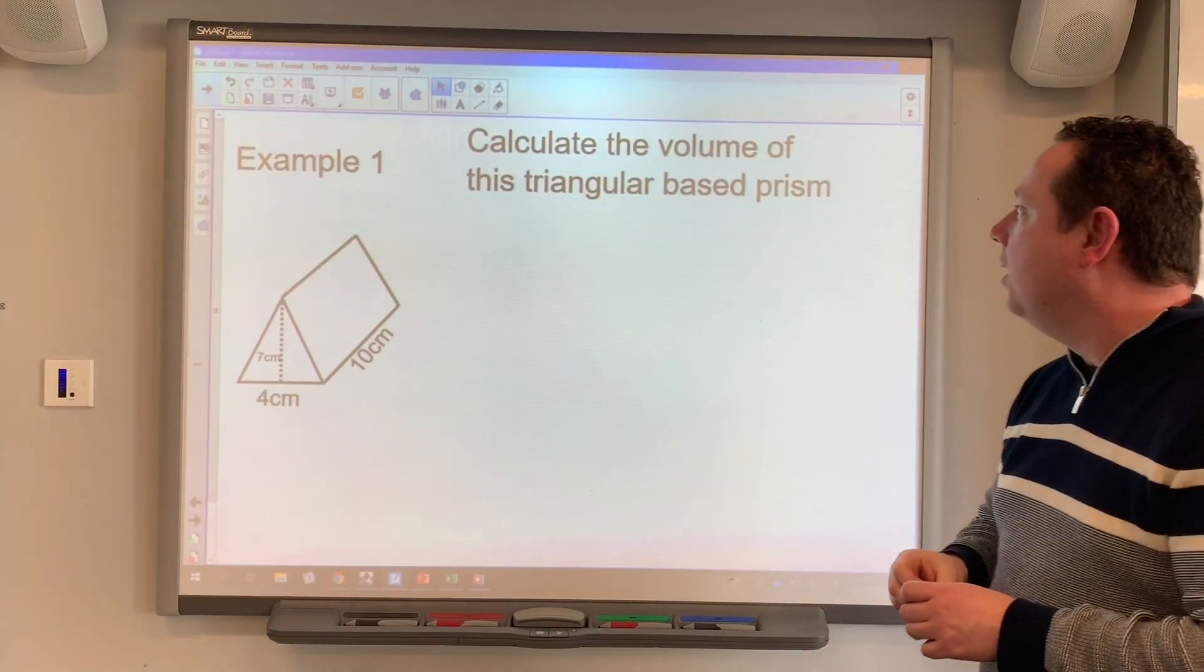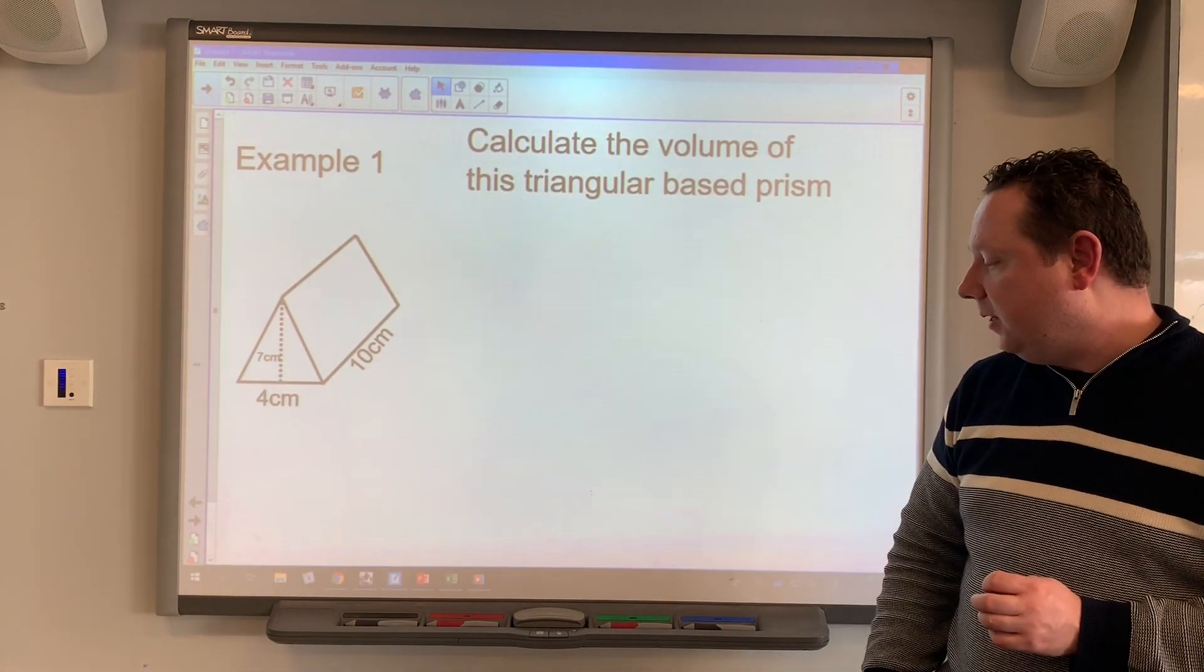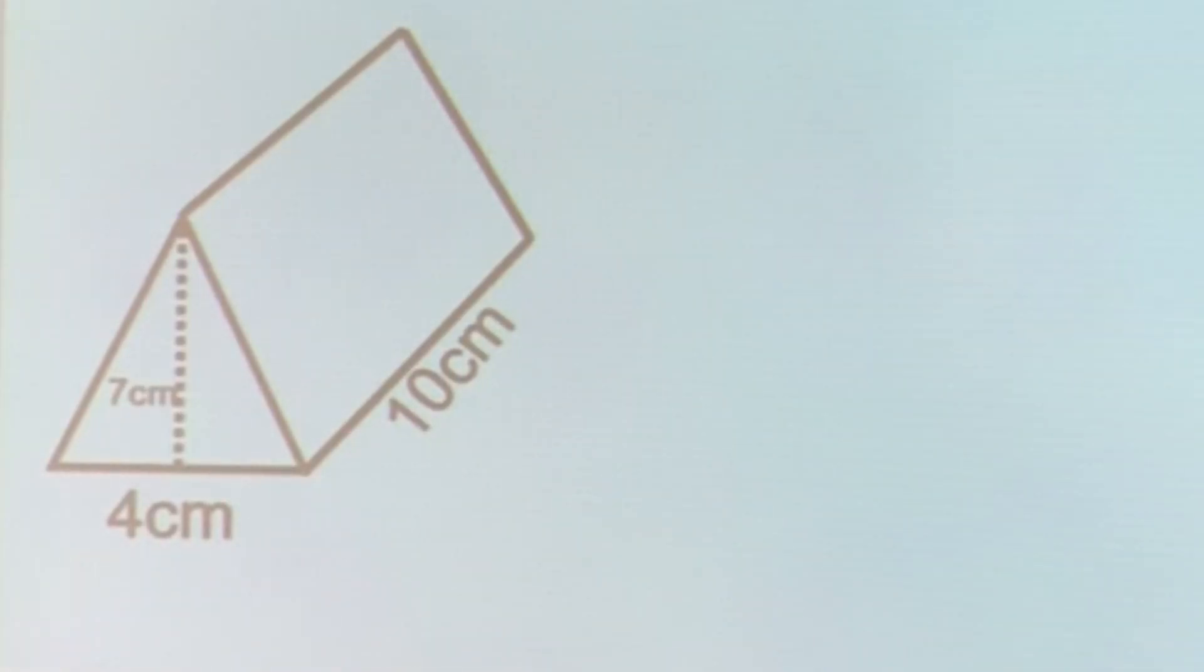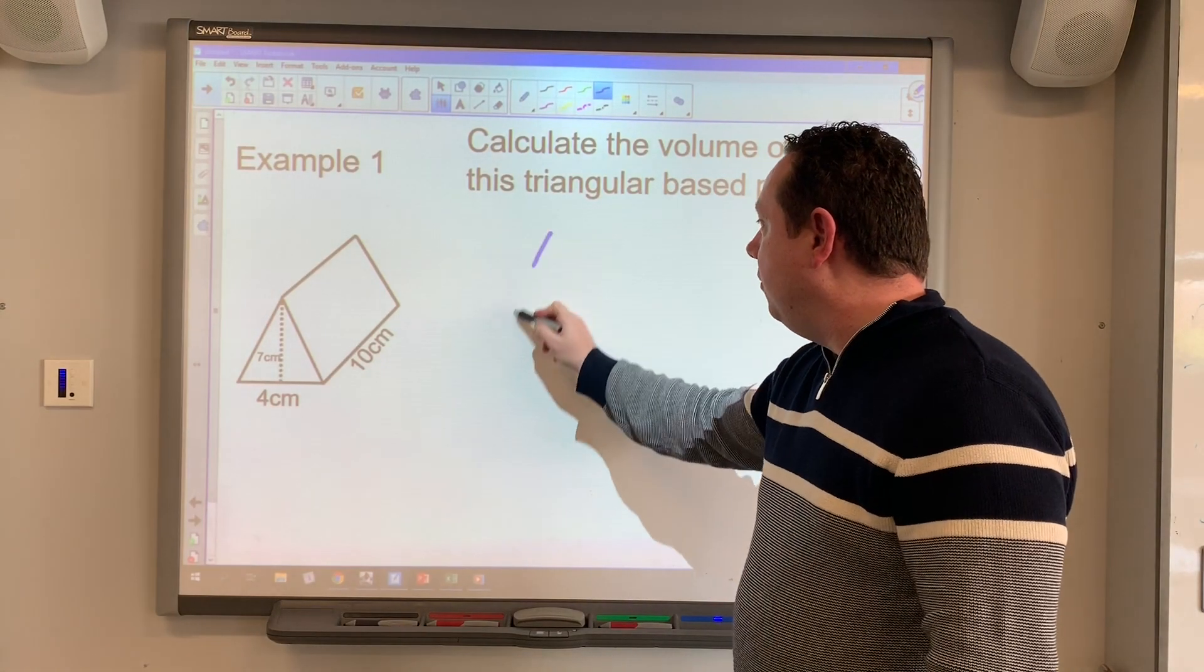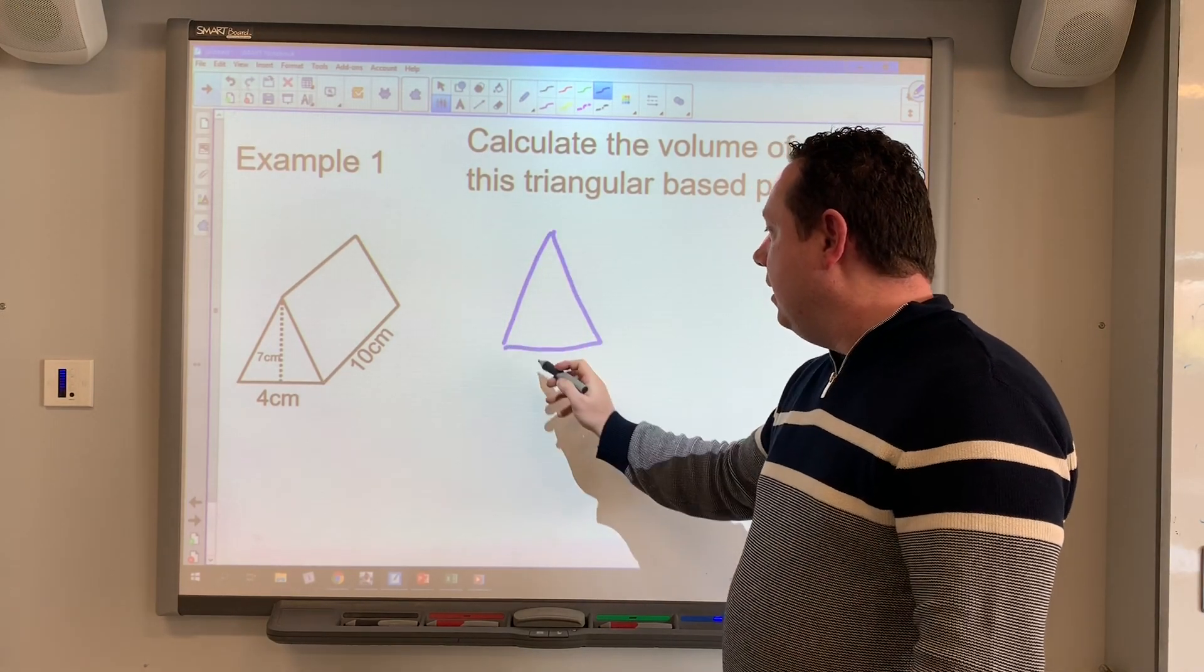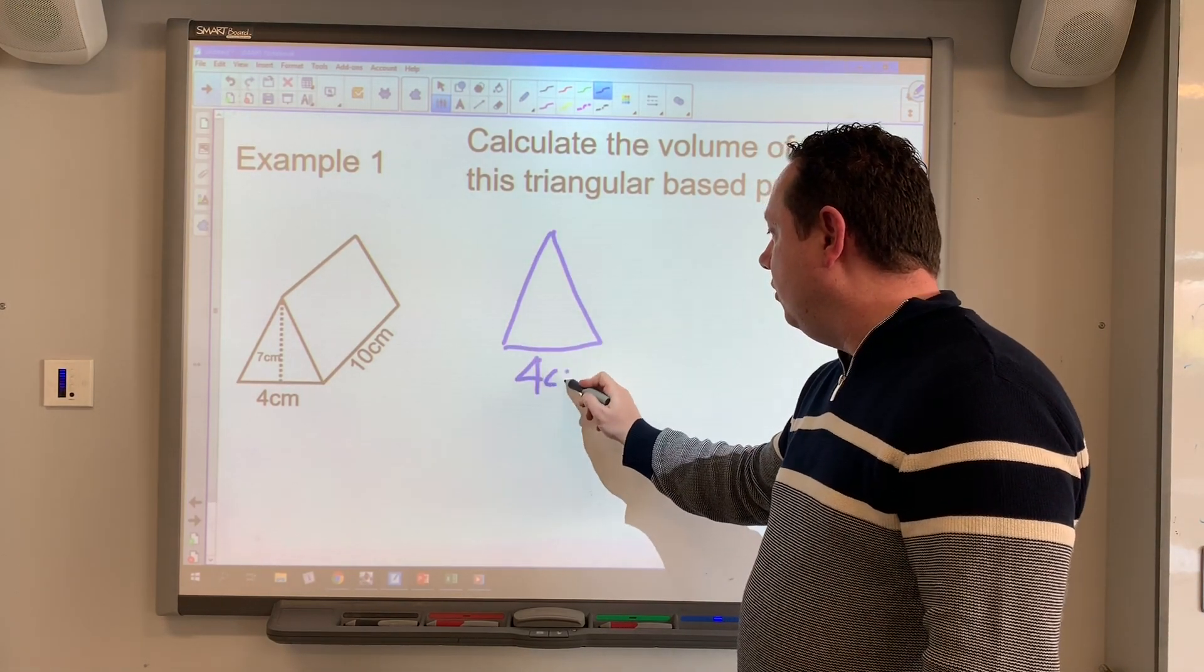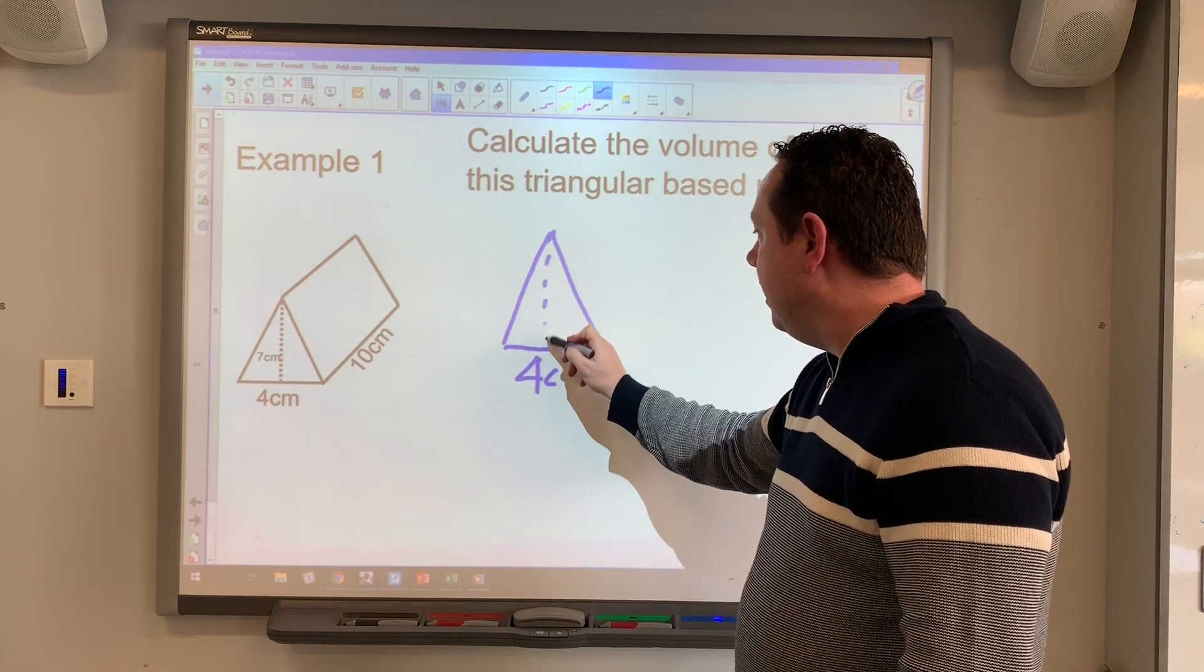It says calculate the volume of this triangular based prism. So like yesterday step one is still the same, I identify my cross section. So step one, there's my cross section, it's a triangle. It's four centimeters on the base and its height of the triangle is seven centimeters.